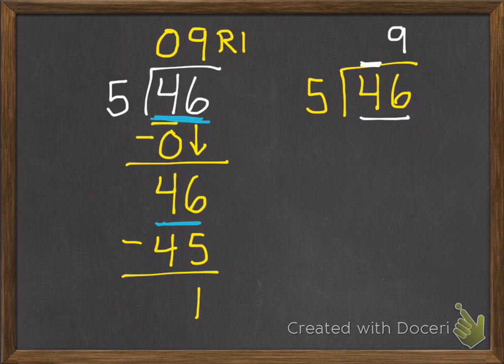So how many 5s are in 46? There's 9. 9 times 5 is 45. 46 subtract 45 is 1. There's nothing to bring down. So it's 9, remainder 1. Much quicker, less writing, than having to go through that step.